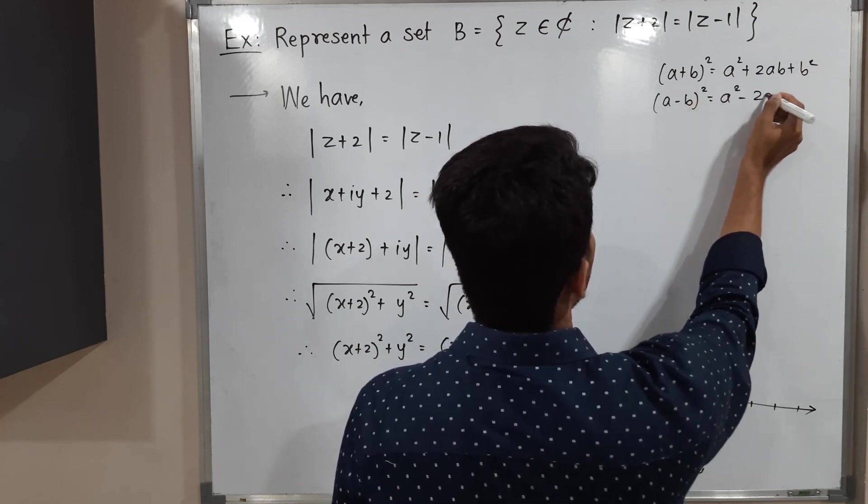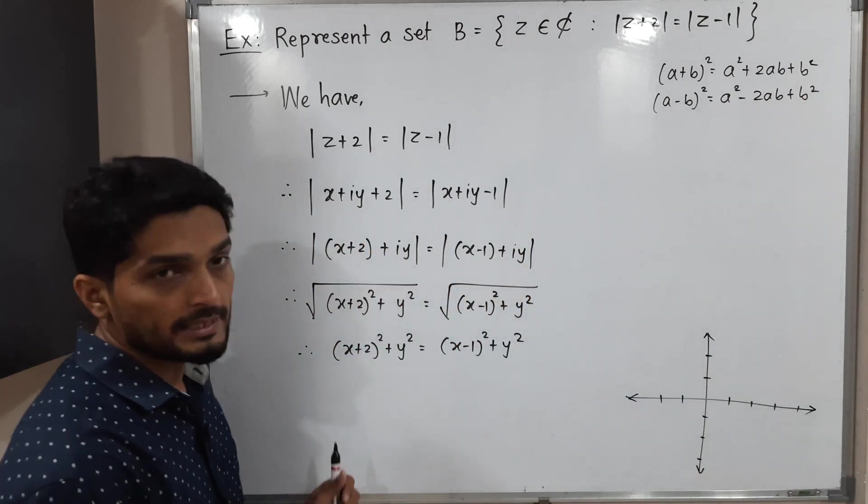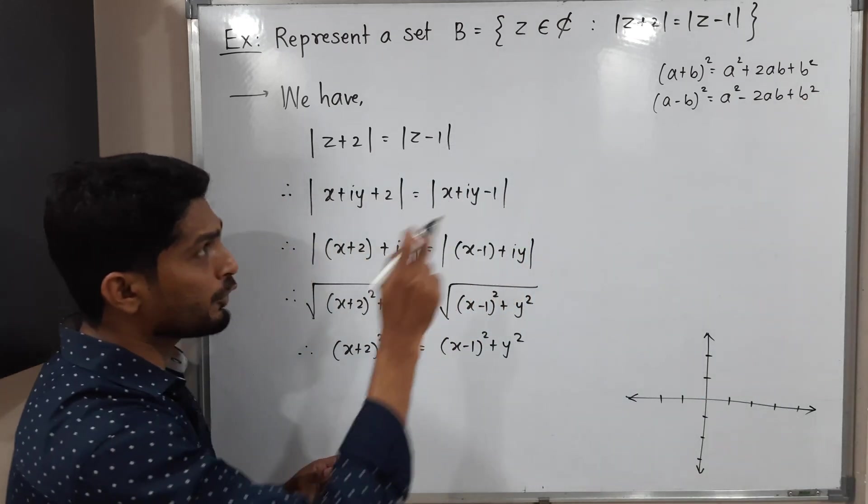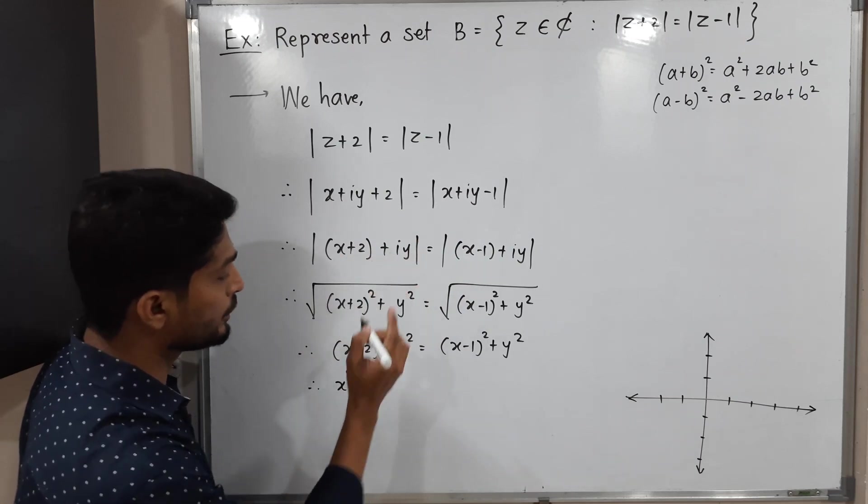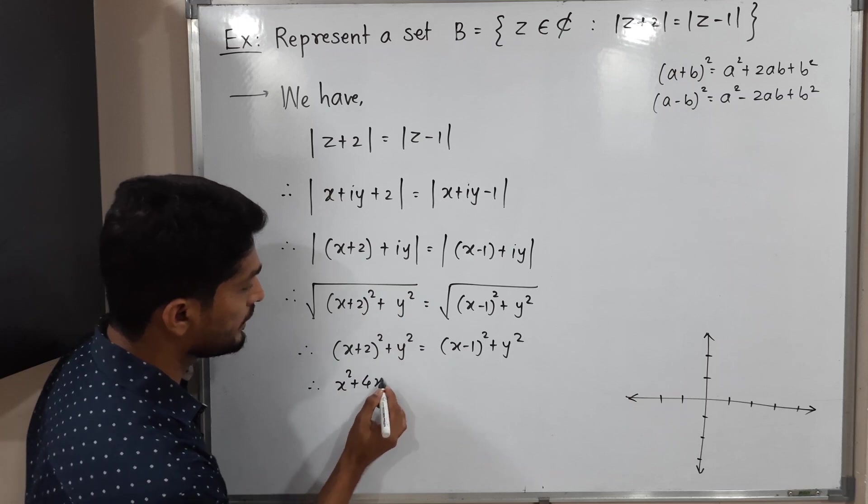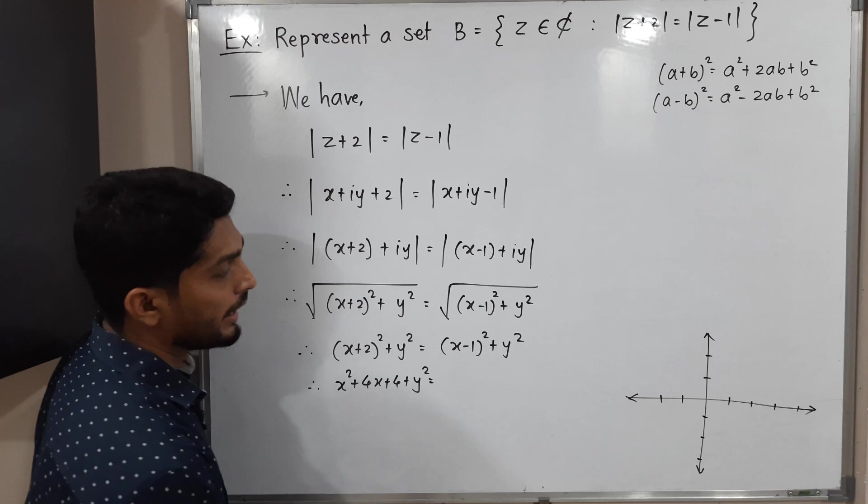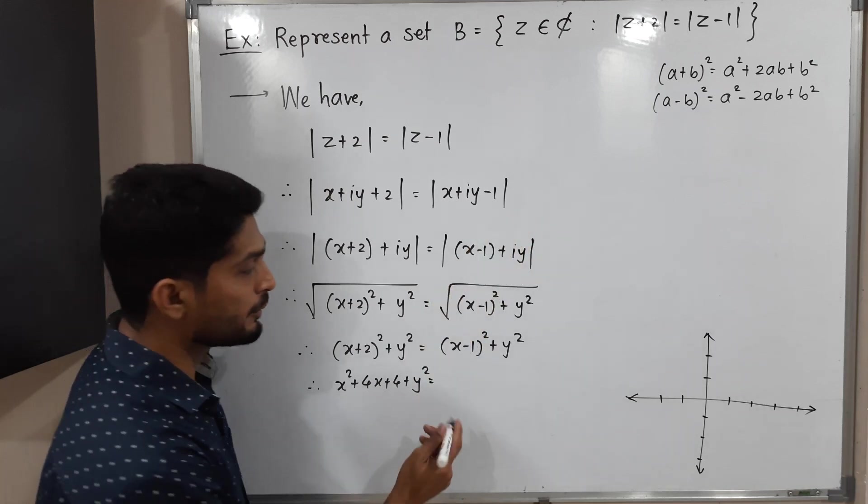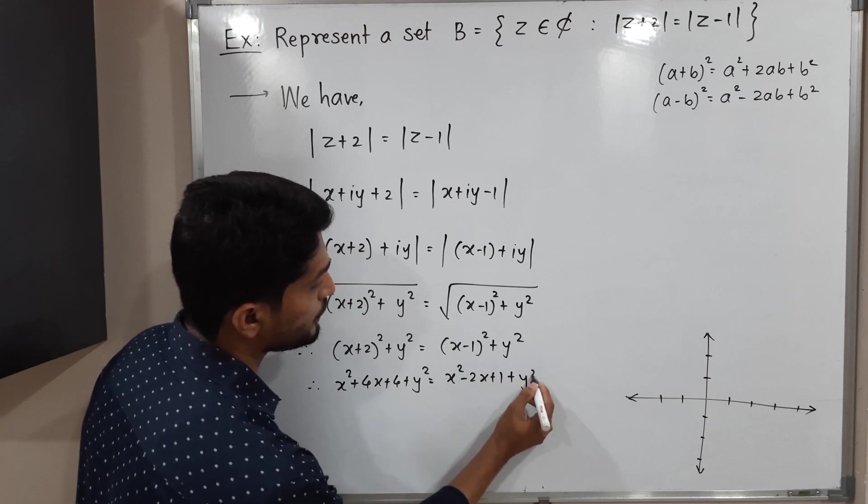So I am going to use those formulas here. So the first formula for first bracket, right. So x square, so 2 into a b that means 4x and b square that means 4 plus y square, and second formula for second bracket x square minus 2x plus 1 plus y square.